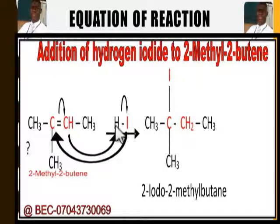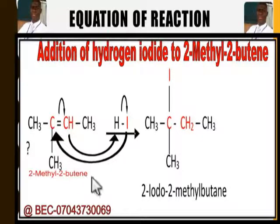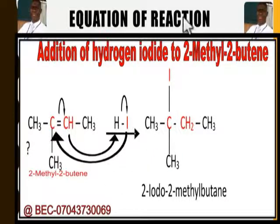In reaction mechanism, electrons move from the negative to the positive. The negatively charged iodine attaches to the positively charged carbon. The other carbon is negatively charged, so the positively charged hydrogen attaches to it. Attaching this hydrogen gives CH₂, and attaching this iodine to the other carbon gives the iodine position — leading to the formation of 2-iodo-2-methylbutane.